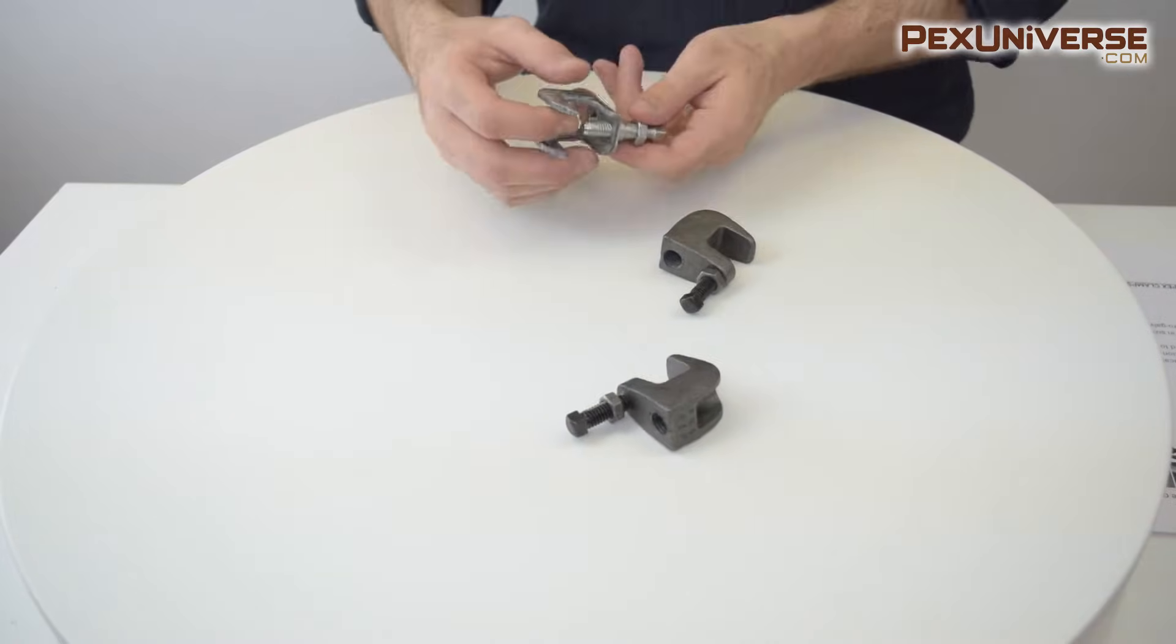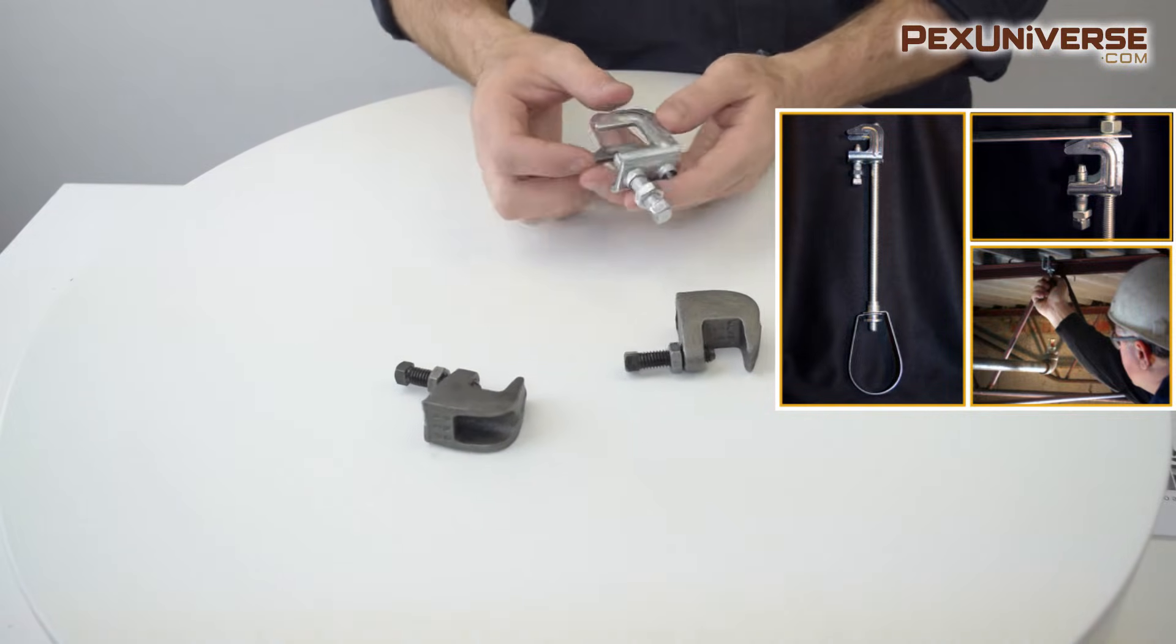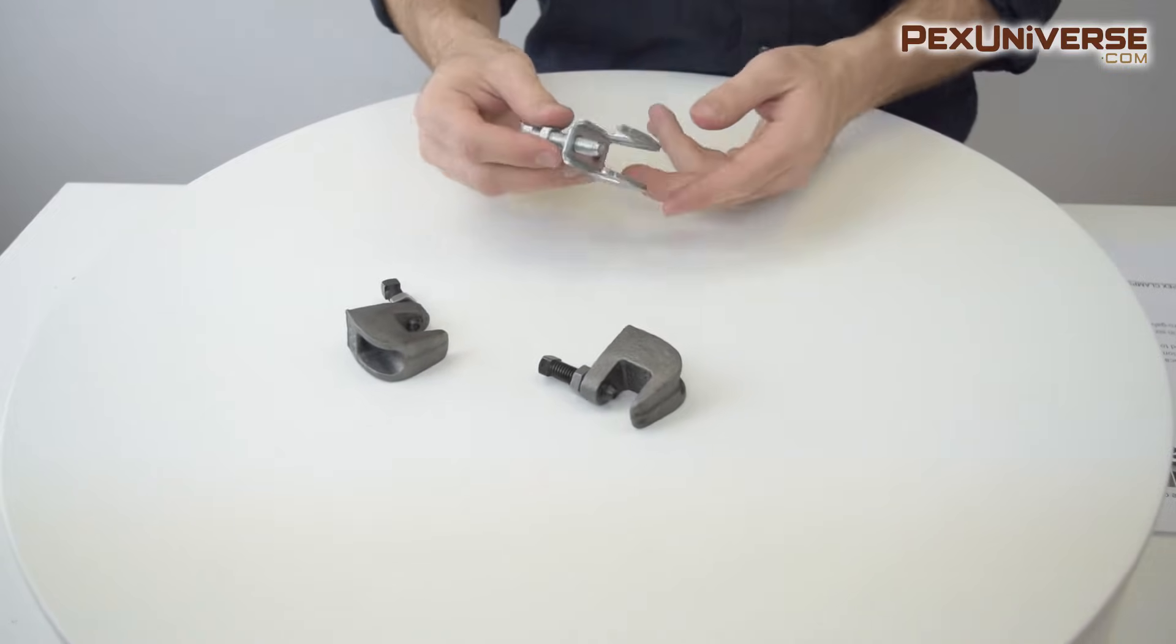Top beam clamps are designed for attaching hanger rods to the top flange of a beam or bar joist where the flange thickness does not exceed three quarters of an inch.